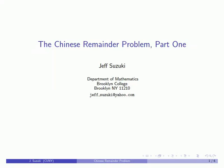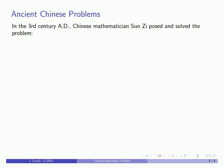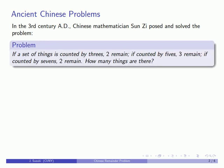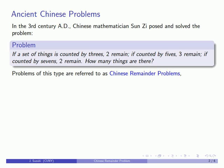One of the most powerful tools in modern number theory is something called the Chinese Remainder Theorem, and this originates from something known as the Chinese Remainder Problem. This actually appears in the 3rd century AD. The Chinese mathematician Sun Shi posed and solved the following problem: suppose I have a set of things. If I count them by threes, two remained. If I count them by fives, three remain. If I count them by sevens, two remain. And the question is, how many things are there? And because of its origin in an ancient Chinese text, this type of problem has become known as the Chinese Remainder Problem.